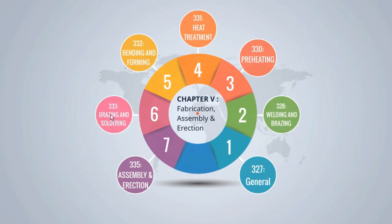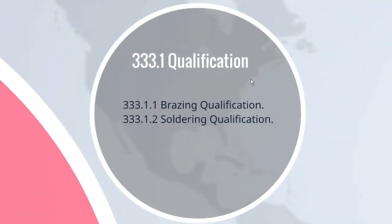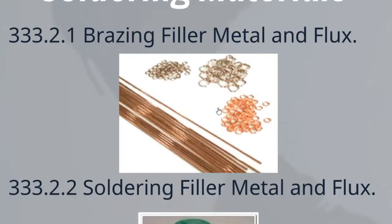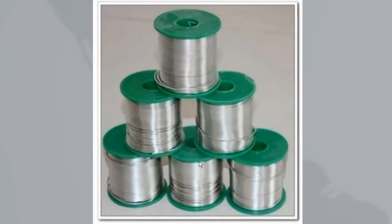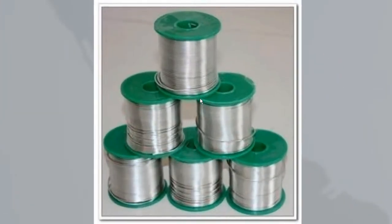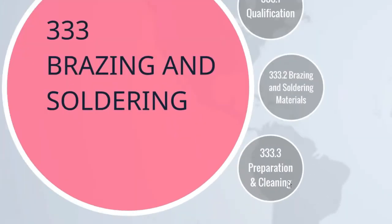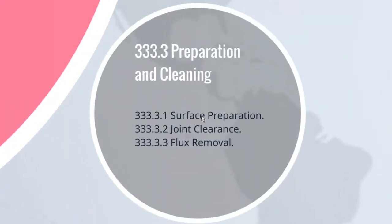Requirements for brazing and soldering are detailed in para 333. First subpara 333.1 lists qualification requirements for brazing and soldering in two subsections. Second subpara covers brazing and soldering materials, providing specification requirements for brazing filler metal and flux, and soldering filler metal and flux. A further subparagraph covers preparation and cleaning, detailing surface preparation, joint clearance, and flux removal.